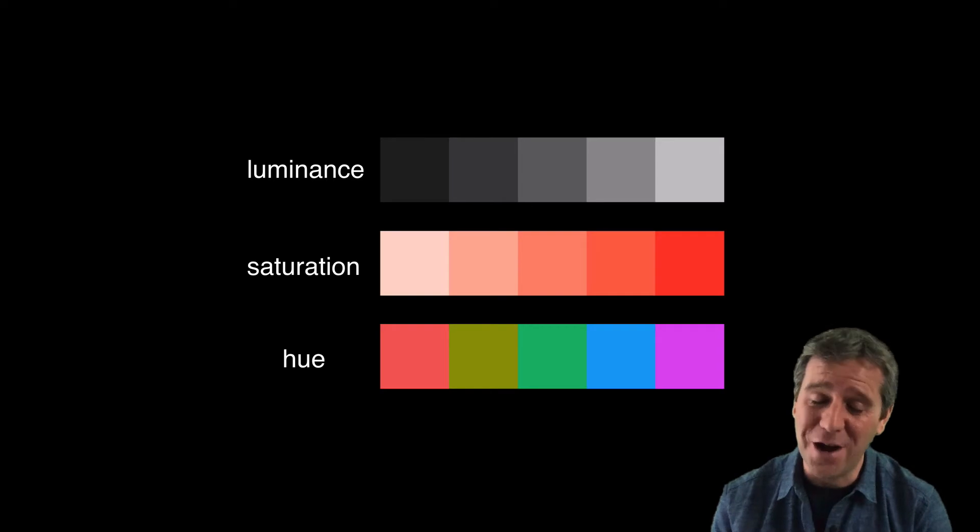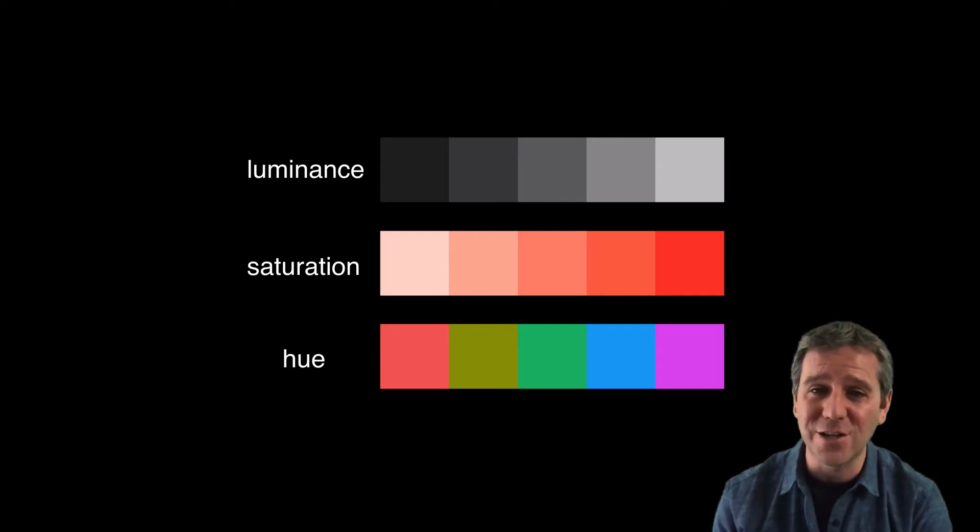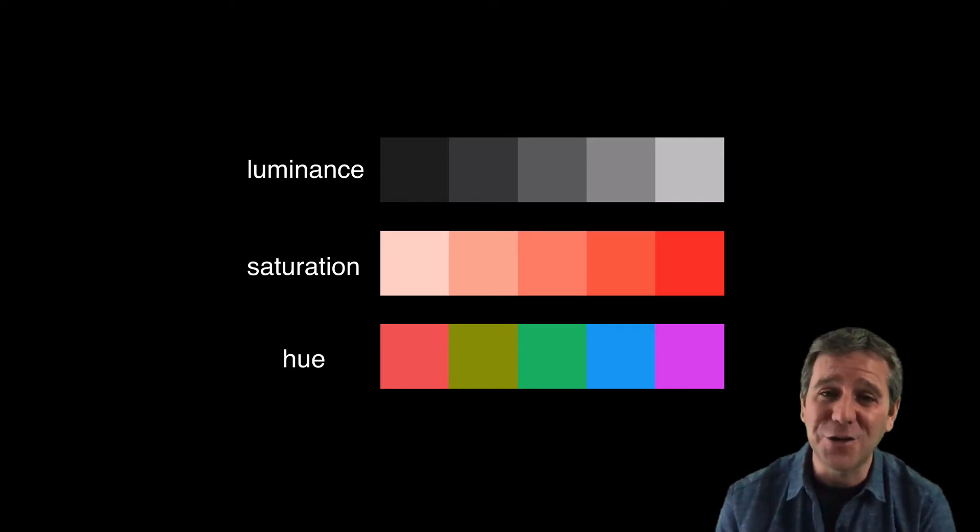Color, perhaps surprisingly, is a rather complicated thing. It's composed of a combination of three things: hue, saturation, and luminance. Hue is the spectrum of colors we use common names for like red, orange, yellow, green, blue, purple. It's really the frequency of color.